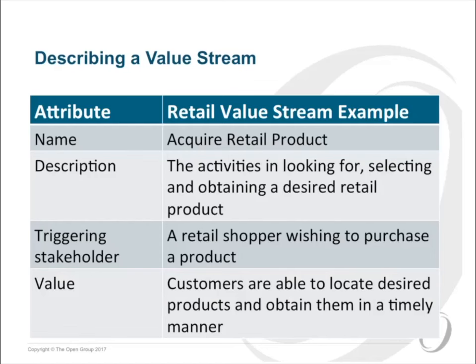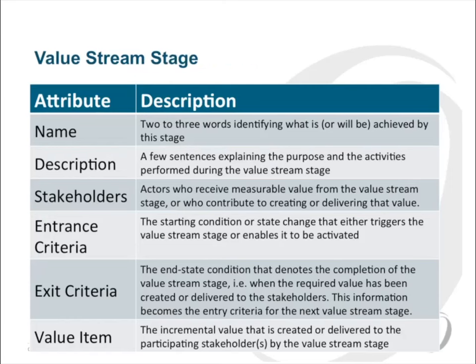Let's get into the mechanics of creating a value stream. The first thing that we want to do is name it. It's really amazing how much time you can spend on a name, because a lot of business areas sometimes don't look beyond that. So we want a name that — like 'acquire retail product' — most of you can understand. A good description to try and bring that a little bit alive. And usually there's one triggering stakeholder, and we want to define the value that's going to be achieved within the context of delivering that value stream.